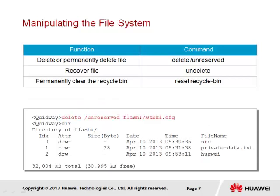In terms of file deletion, there are a number of commands that support this operation. The delete command is used to effectively erase a file from the file system. However, the process will in fact transfer the file to a recycle bin, from where deleted files can be retrieved if necessary. The command used to retrieve a file that has been deleted from the recycle bin is the undelete command. If it is wished that the file be permanently deleted, the delete command together with the unreserved parameter should be used. A file in the recycle bin can also be permanently deleted using the reset recycle bin command. The example here shows the use of the delete command to permanently delete a configuration file in the flash storage device, and the dir command verifies its deletion.